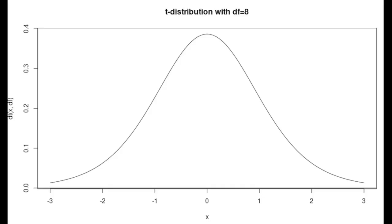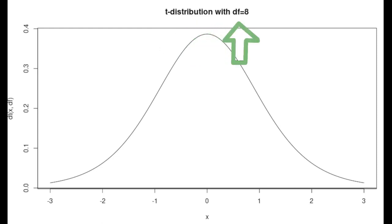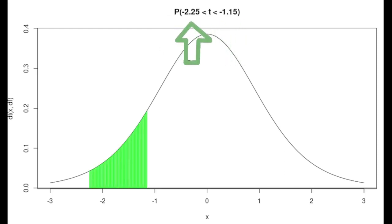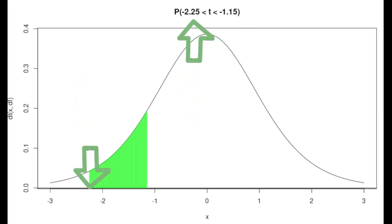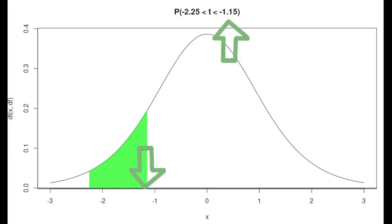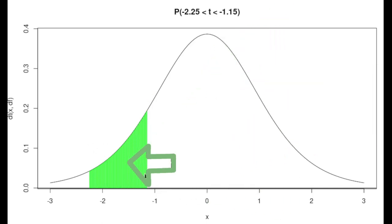The ideas presented here will work for any of the probability distributions we've studied. We will look at a t distribution with 8 degrees of freedom as our example. In this example, we're going to try to find the probability that a t value ends up between negative 2.25 and negative 1.15 — in other words, this green area.